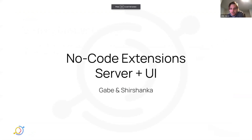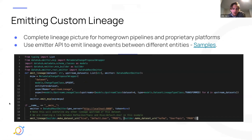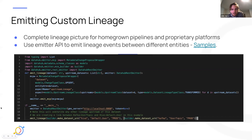To wrap up, we've recently rolled out more documentation around this concept. We have examples showing every single edge type, as well as how to create each one using the metadata change proposal wrapper abstraction. We're going to be looking for community feedback to continue making those docs as rich as the community needs them to be. Definitely take a look and let us know.